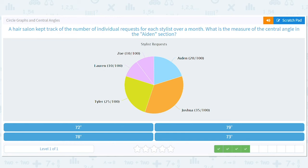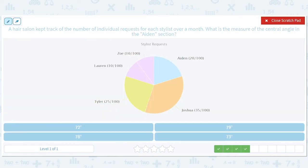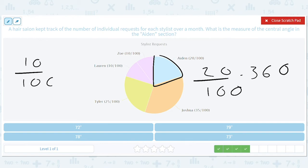What is the central angle in the Aiden section? Okay, so that's this. That's 20% of 360. So 20 out of 100 times 360. Well, look, you guys remember what 10 out of 100 times 360 is, right? That's 36. So what's 20 out of 100 times 360 going to be? 36 times 2 or 72 degrees.